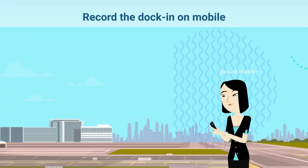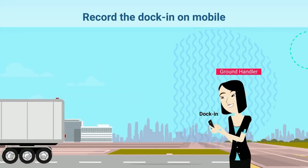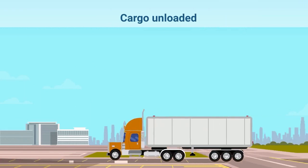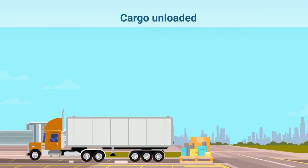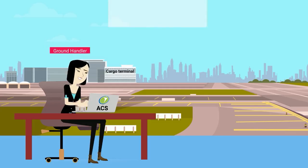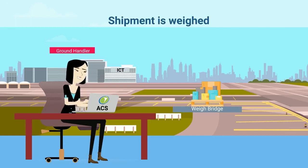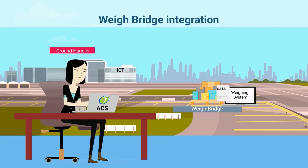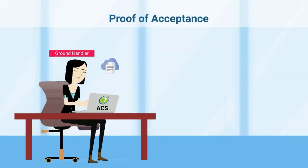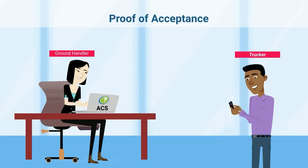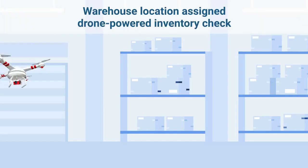Smart apps integrated with the platform capture data on a real-time basis. Data from other equipment like weigh bridges, boom barriers, drones at the warehouse, and screeners flow into the system for proof of delivery, inventory, and security checks.